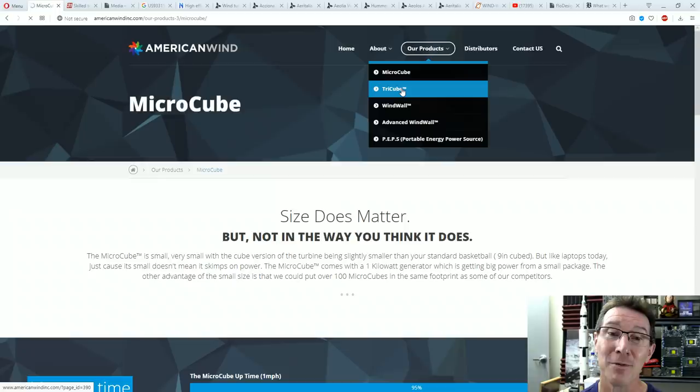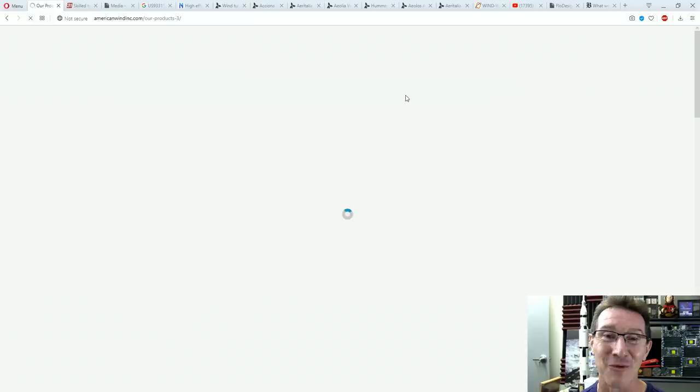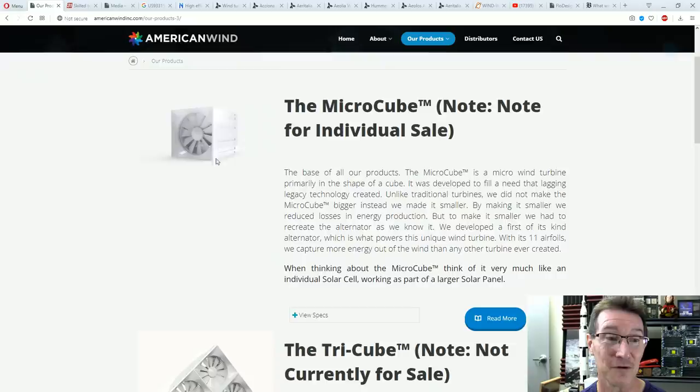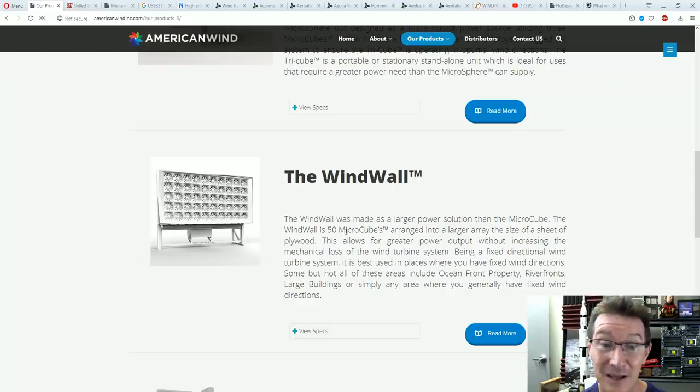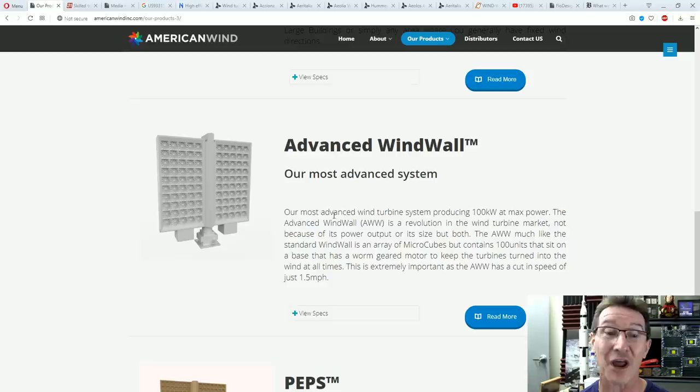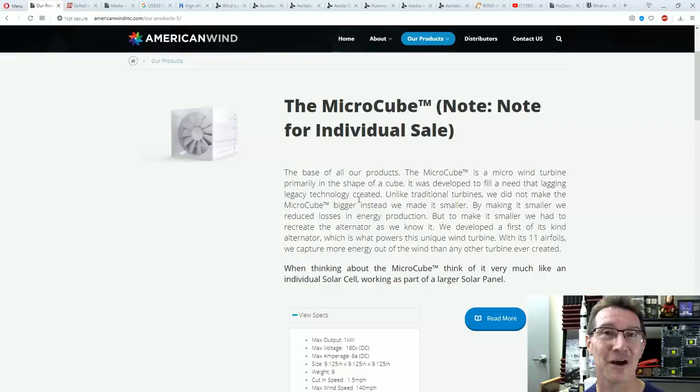But the thing about this is that they actually take the micro cube and then they just stack them together. They can stack them into three cubes like this or they can go bigger. You can get 50 of them for the wind wall, or the giant advanced wind wall with a hundred of these things. So they claim this is a 100 kilowatt wind generator.